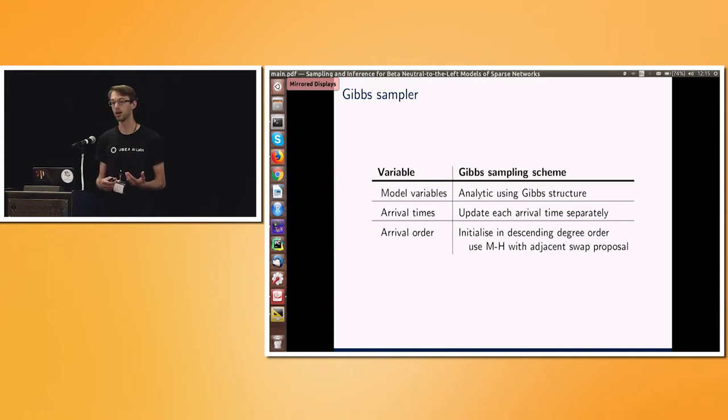What we find is that we initialize everything in a particular order. So the intuition is, if I have a high-degree vertex, it's likely that that entered early and was able to build up all these edges connecting to it. So that's a good initialization. And then to actually sample, we'll just use some sort of swap proposal. So this lays out a way to do an efficient Gibbs sampler for this BNTL class of models, which we're really concerned about because of this missing behavior that those edge-exchangeable models can't get us.